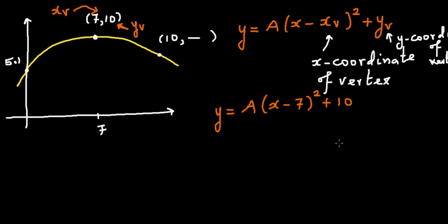Now you have to just figure out what is A, for which you have to substitute any value other than the vertex. We've got this point which is the y-intercept. So the y-intercept tells me that when x is 0, y is 5.1. So let's put this in this equation and try to find the value of A. So in place of y I'm going to put 5.1 equals A times 0 minus 7 the whole squared plus 10.